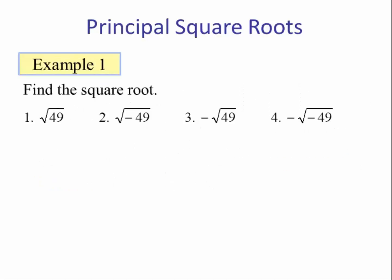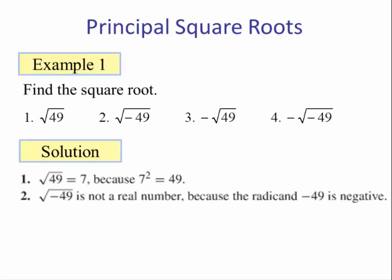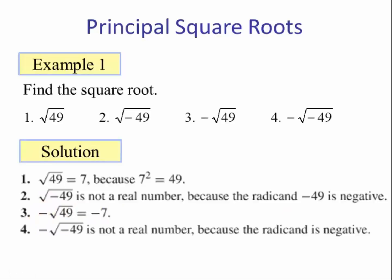Example 1: find (1) the square root of 49, (2) the square root of negative 49, (3) the negative square root of 49, and (4) the negative square root of negative 49. Solution: (1) the square root of 49 is 7, because 7 squared is 49. (2) The square root of negative 49 — we cannot take the square root of a negative number. (3) The negative square root of 49 is negative 7; we can think of the negative on the outside as negative 1, so we compute the square root of 49 and then multiply that answer by negative 1. (4) The negative square root of negative 49 is not a real number because the radicand is negative.